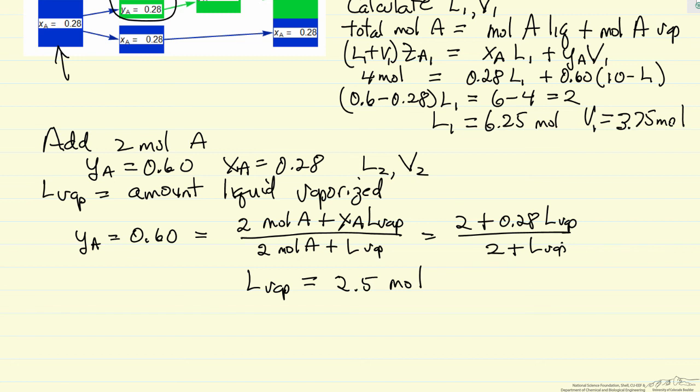That satisfies that we have a mole fraction still 0.6 in the vapor phase, because we evaporated both A and B in the correct proportions, the same as in the liquid phase, then the liquid phase mole fraction doesn't change.